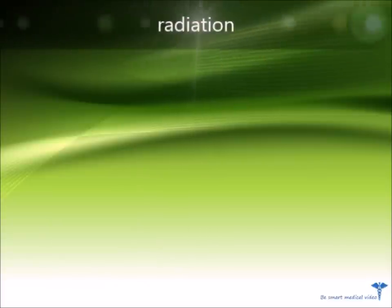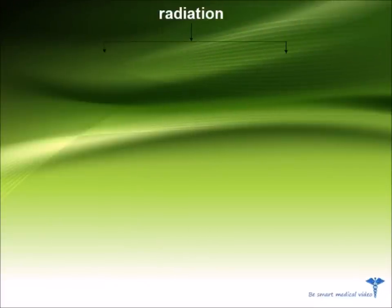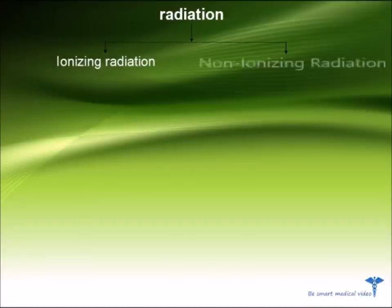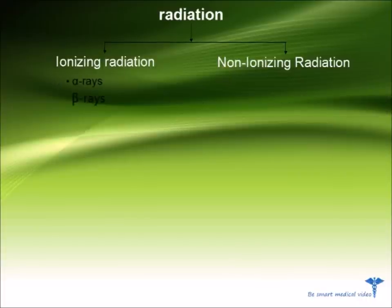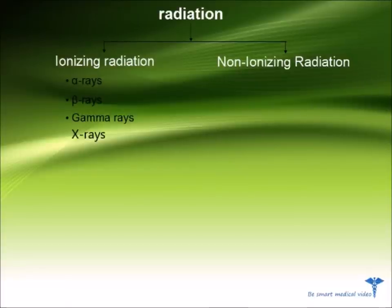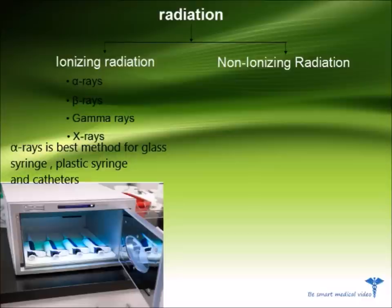Radiation. There are two types of radiation: ionizing radiation and non-ionizing radiation. In ionizing radiation we use alpha rays, beta rays, gamma rays, and X-rays. Alpha rays sterilization is the best method for glass syringes, plastic syringes, and catheters.